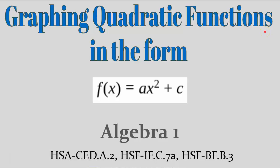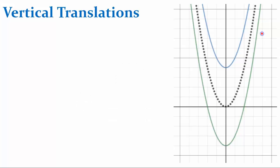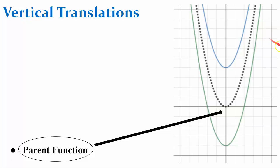Welcome to graphing quadratic functions in the form f of x equals ax squared plus c. These functions are vertical translations of the parent function. The parent function is this black dotted function right here that we discovered in the previous lesson.